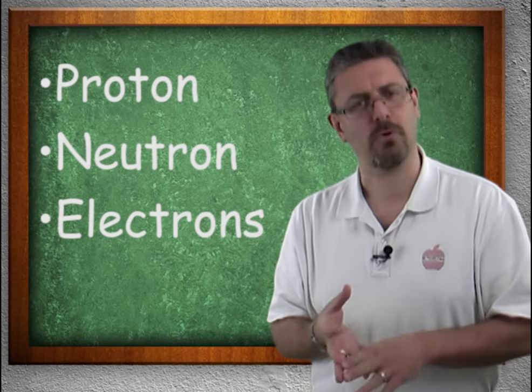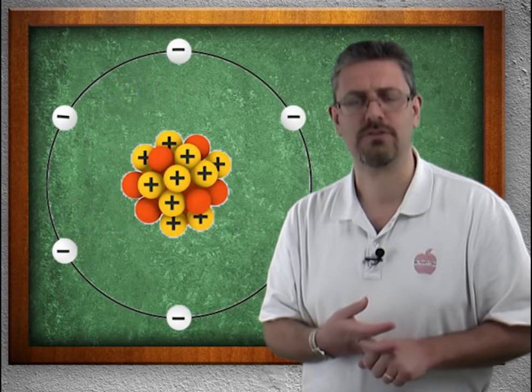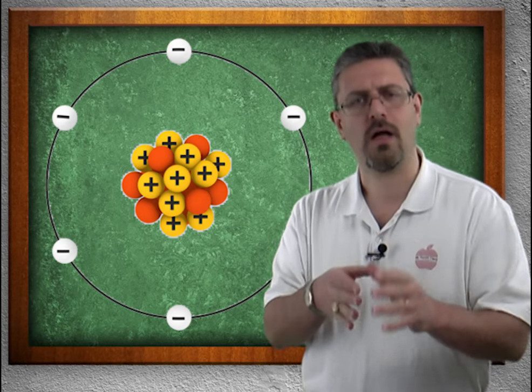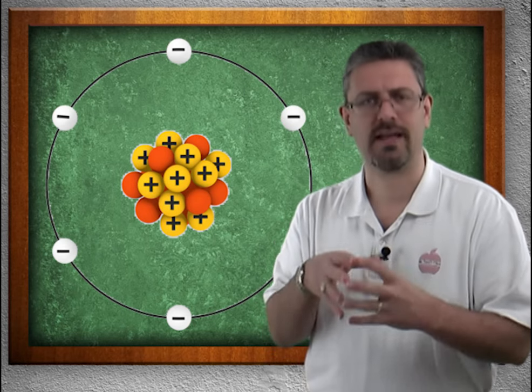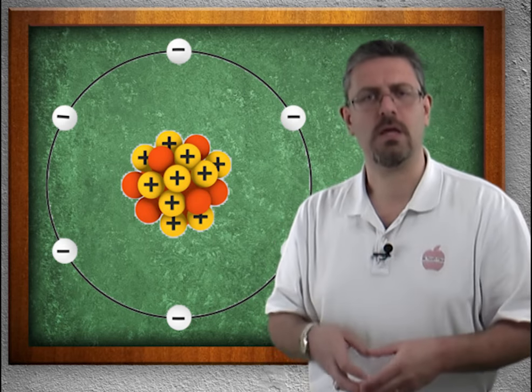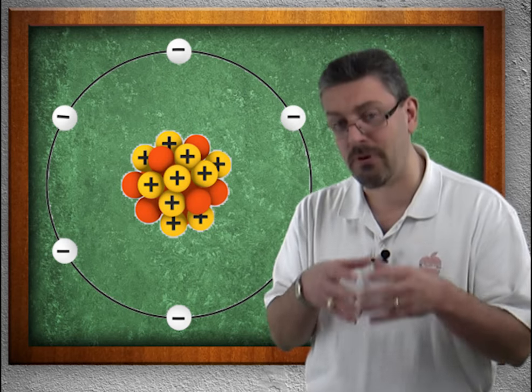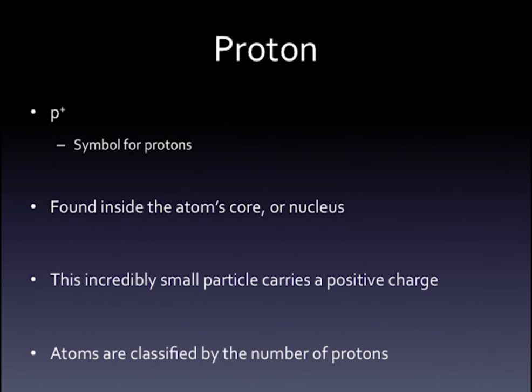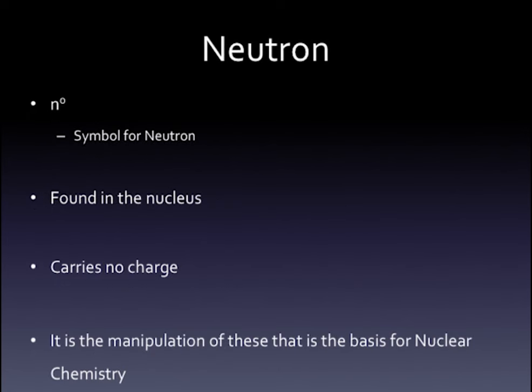We have the protons and the neutrons. The protons and neutrons are found in the nucleus of the atom, the center area of the atom. The protons have a positive charge. The neutrons have a neutral charge.